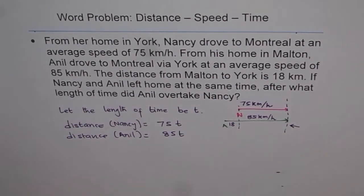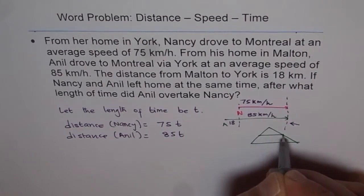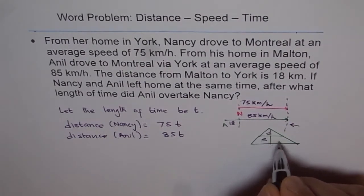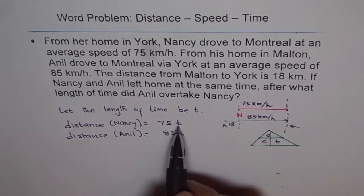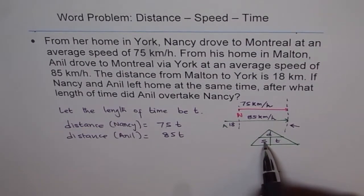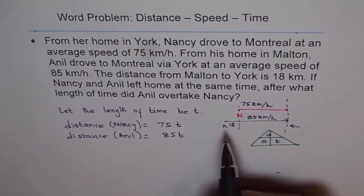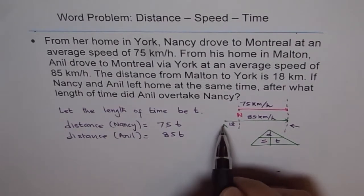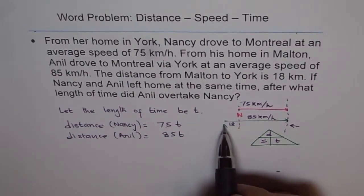How do we get this relation? Let me get back to our triangle, which we discussed earlier — it's a good reminder. The relation between distance, speed, and time: distance is the product of speed and time. Speed times time gives you distance, and if you want to find speed, it is distance divided by time. Since Anil starts 18 kilometers before York, Anil covers a distance of 18 kilometers more than Nancy.